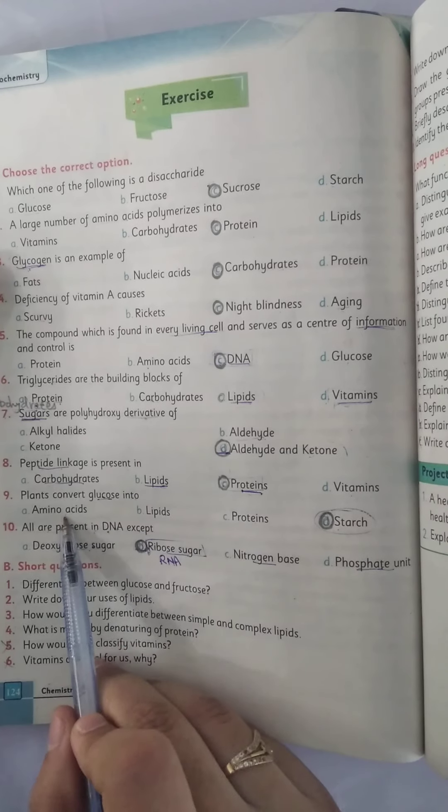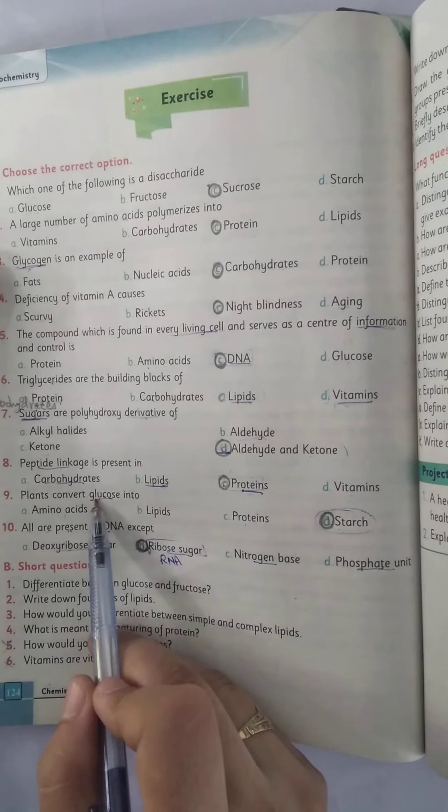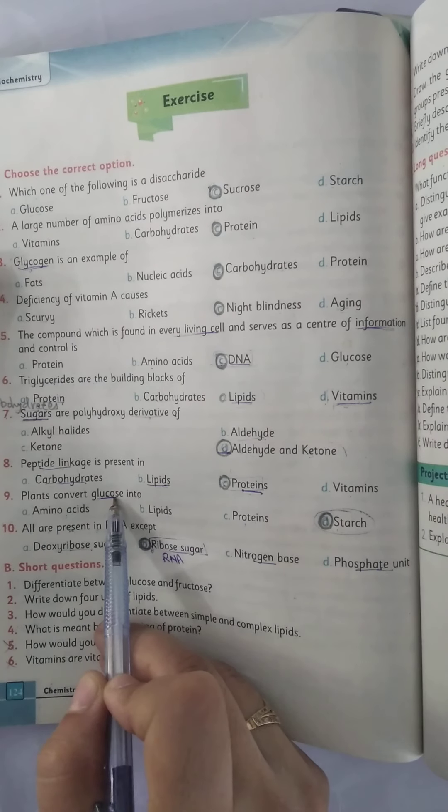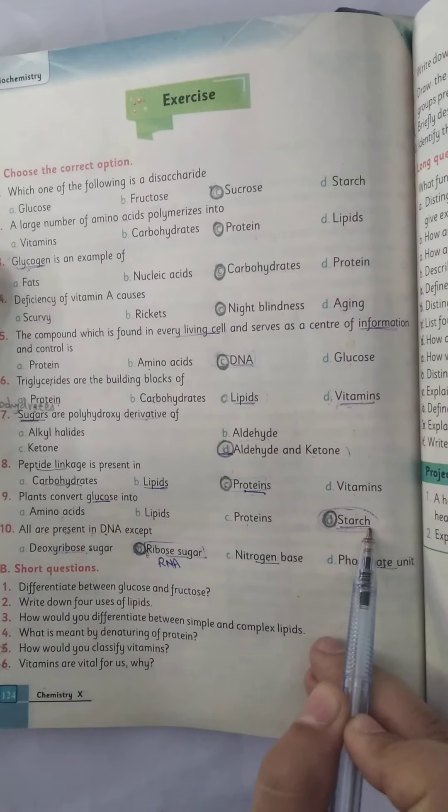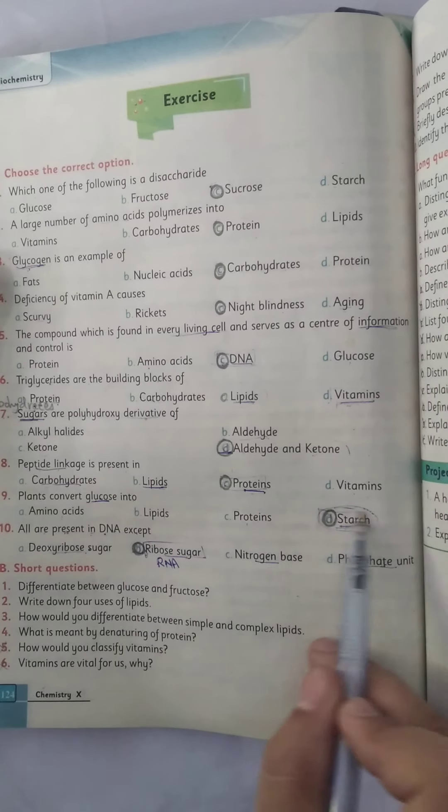Plants convert glucose into amino acids, lipids, proteins, starch. As we know that glucose is an example of carbohydrates and starch is the storage form of carbohydrate that is present in the plant. So the correct option is starch.